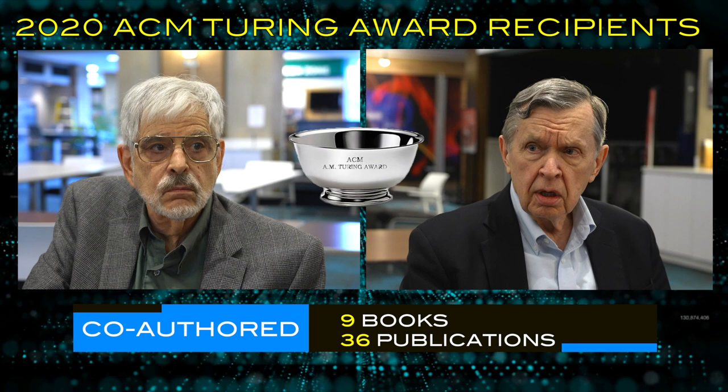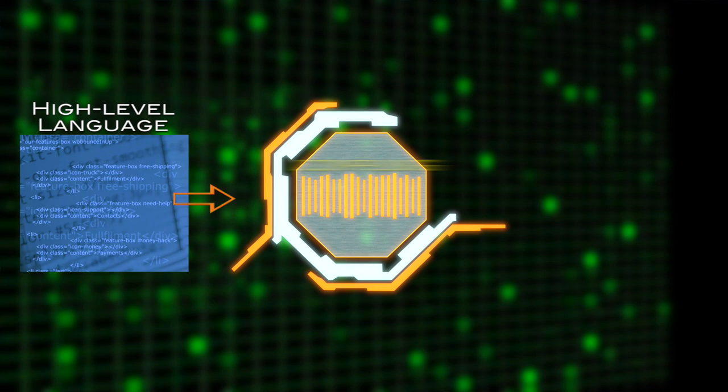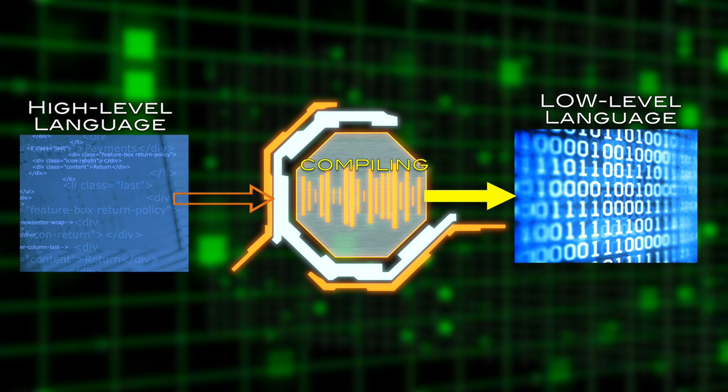Ullman and Aho's contribution to both the theory and practice of computer languages has earned them the 2020 ACM AM Turing Award. Compilers, translating high-level computer language into a more basic set of instructions, exist today largely in part due to Aho and Ullman's contribution in this field of research. So how did the two meet, and more importantly, how were they able to foster such a strong bond of collaboration?